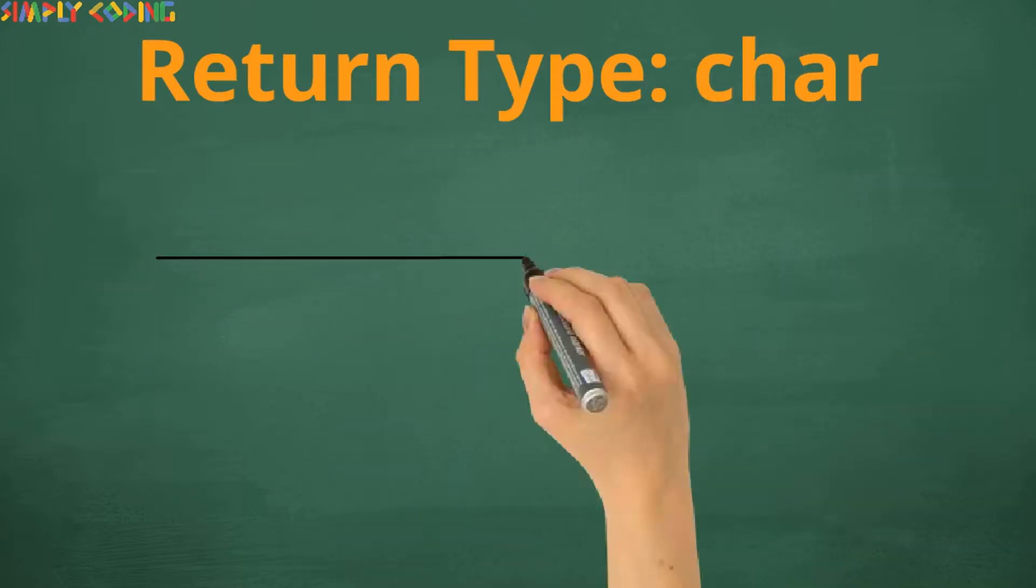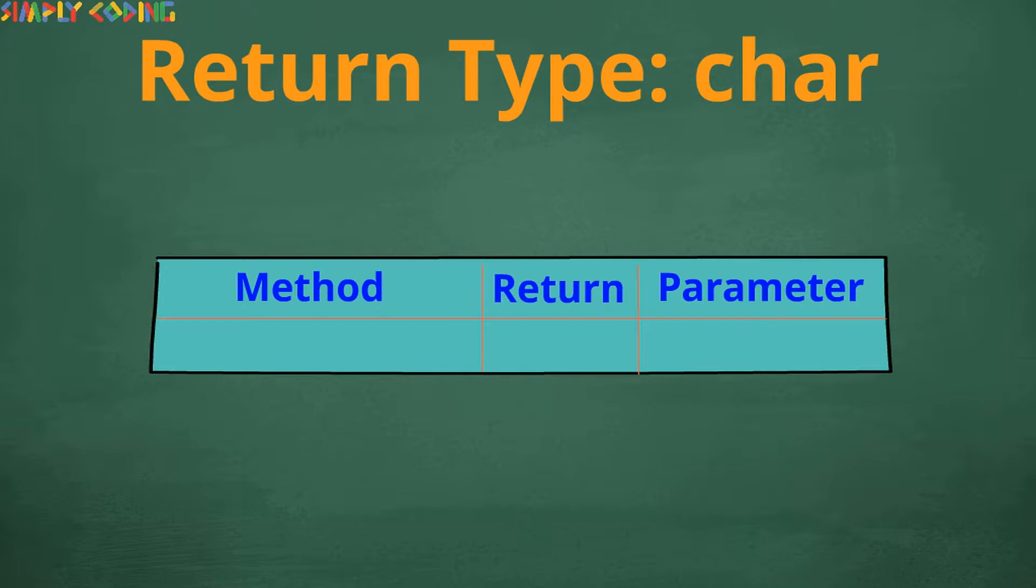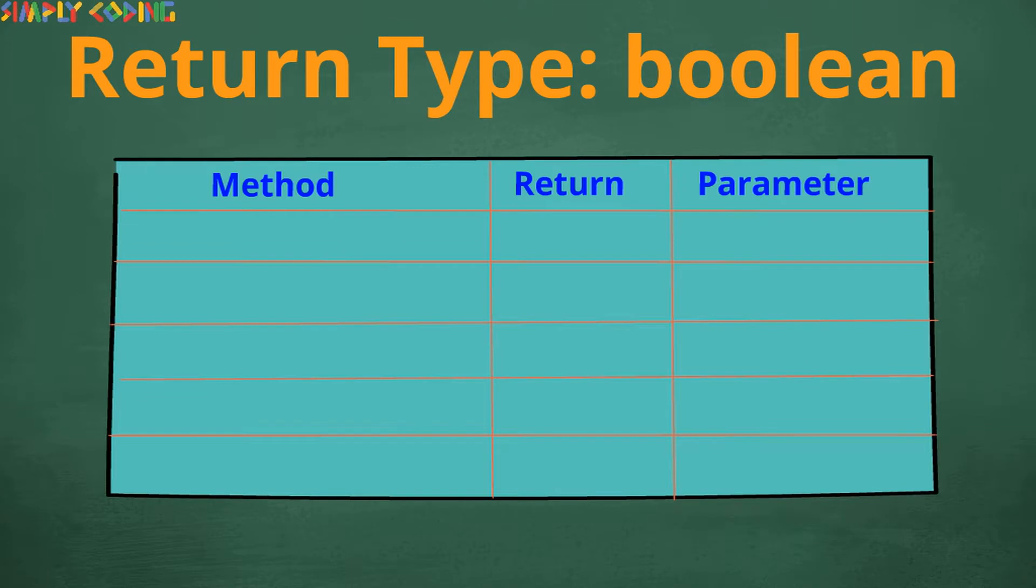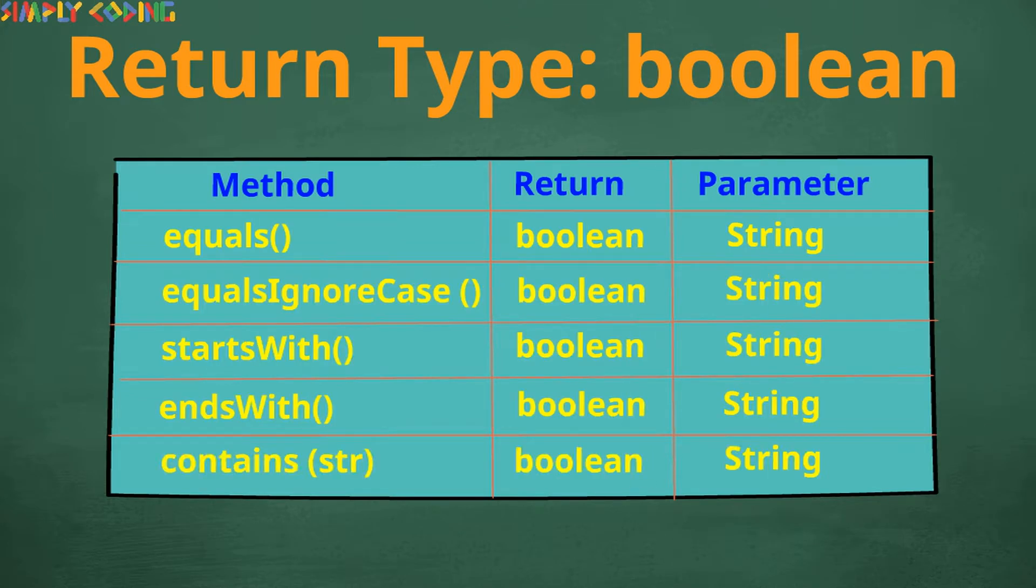First let's look at methods with return char. There is only one char at method which takes an int as parameter. Next there are five methods which return boolean. All of them take in char sequence or string.